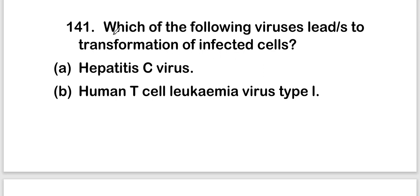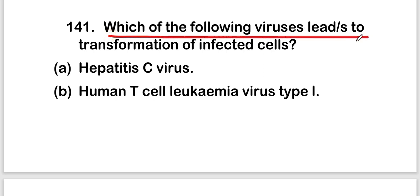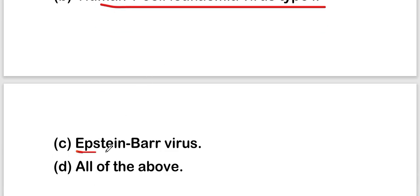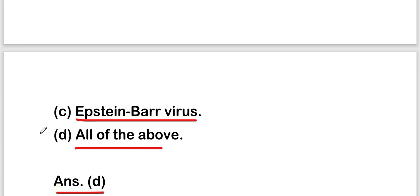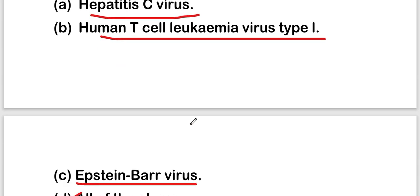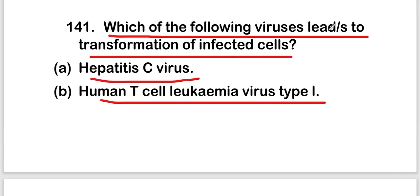The first question is: which of the following viruses leads to transformation of infected cells? The options are Hepatitis C virus, Human T-cell Leukemia Virus type 1, or Epstein-Barr virus, or all of the above. The right answer is option D, that is all of the above. All three viruses — Hepatitis C, HTLV-1, and Epstein-Barr virus — lead to transformation of infected cells.